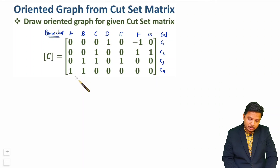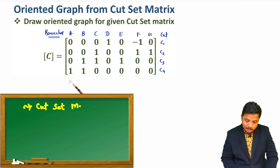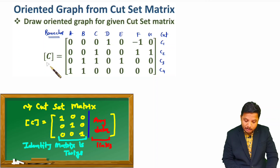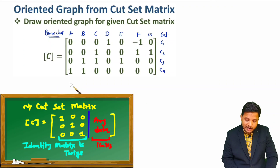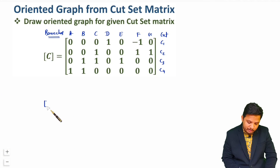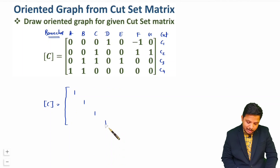Now here you should know some key points regarding cut set. A cut set is having twigs and links. If you reorder the cut set matrix in the proper way, then the twig portion is having an identity matrix and the links portion is having some values, but the twig should have the identity matrix. So what I'll do is rearrange this cut set matrix such that first there will be the identity matrix — what is identity matrix? It is having one diagonally and the rest elements will be zero. So this is my identity matrix.